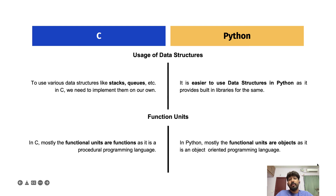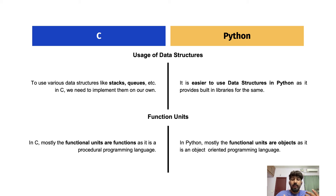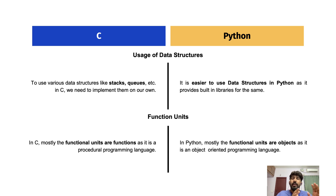Looking at the last two differences — usage of data structures: in C, data structures like stacks and queues must be implemented on your own, meaning you have to write the code for how a stack or queue works. In Python, you can directly use libraries like NumPy and Pandas to use stacks, queues, heaps, trees, and graphs without hard-coding them — that's a big advantage and why Python is heavily used in data science. Finally, regarding function units: small methods are called functions in C but are called objects in Python, since it's an object-oriented programming language.